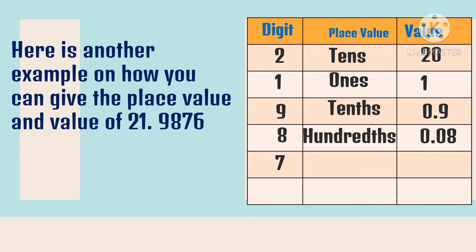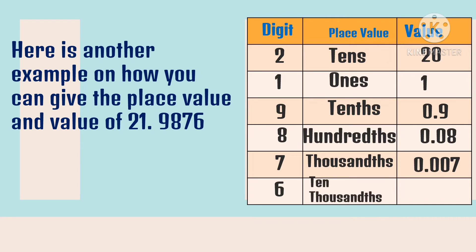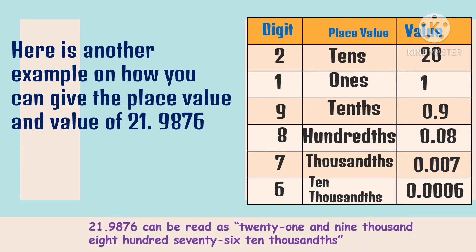Next is the digit 7. The place value of 7 is thousands, and its value is 7 thousands. And lastly, the digit 6 — the place value of 6 is ten thousands, and its value is 6 ten thousands. We read the number as 21 and 9,876 ten-thousandths.